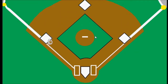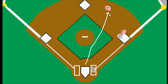Say we have a runner on first base with two outs in the inning and a batter up to bat, and he hits a ground ball to the second baseman. The shortstop runs over to second base to cover because there's a force play on second base due to this runner. With two outs, usually the second baseman will throw to second base to get the force out because it's closer and an easier throw.